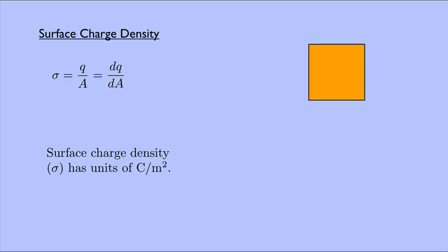And if I had, say, a square surface, where the square had a side of length L and total charge Q, then sigma could be Q over L squared, or dQ over dA.